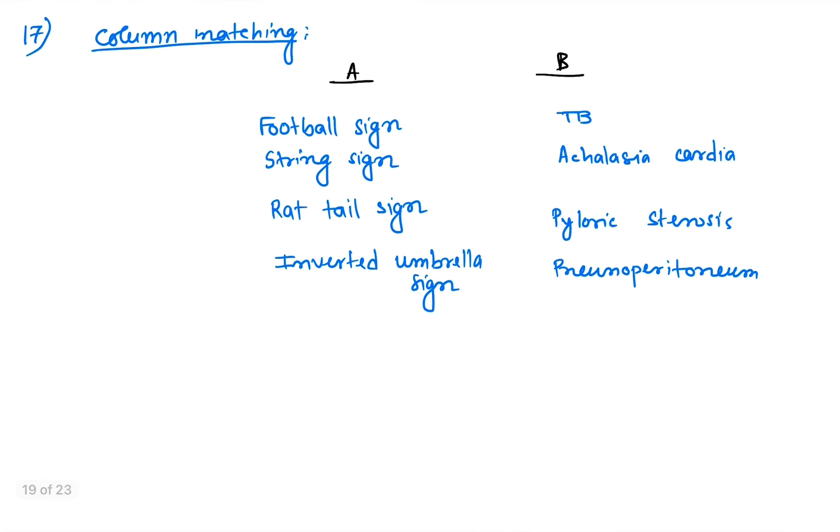Question number 17 is about column matching: radiological sign and associated condition. The football sign is seen in pneumoperitoneum. String sign is found in pyloric stenosis.